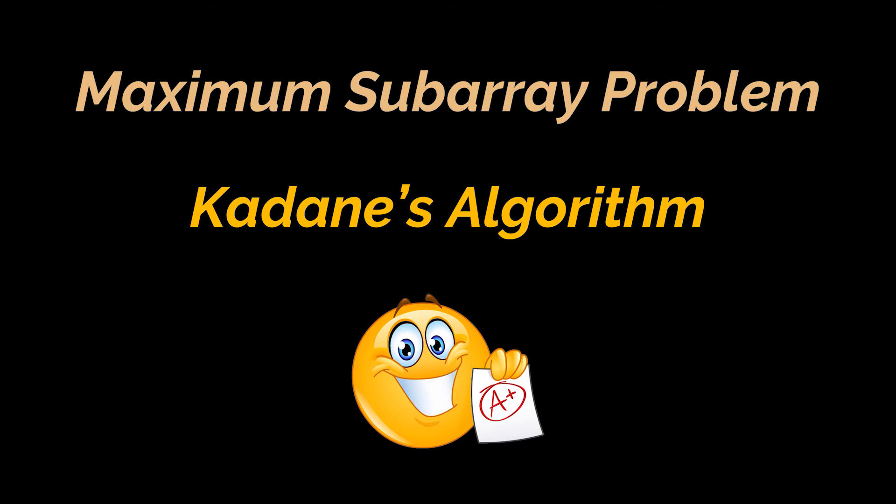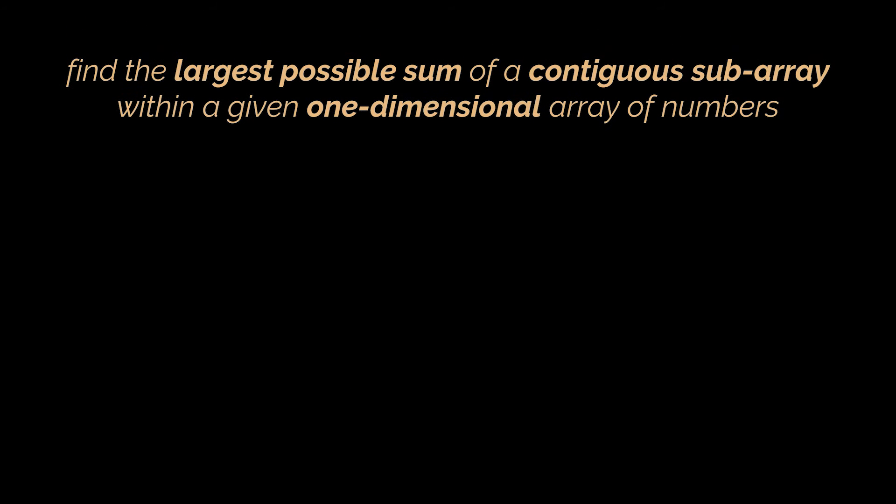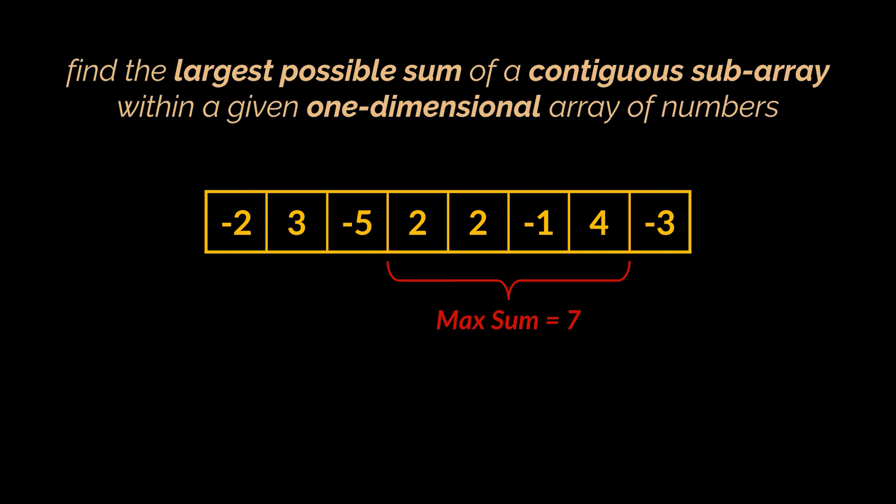So let's start by defining our problem. The maximum subarray problem is the task of finding the largest possible sum of a contiguous subarray within a given one-dimensional array of numbers. As an example, for the array you see in front of you, the contiguous subarray with the largest sum is 2, 2, -1, 4 with sum 7. If you try to sum any other set of numbers you won't get a result bigger than 7.